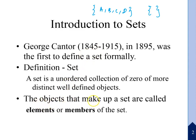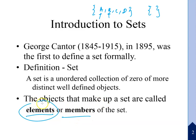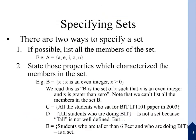The objects that make up a set are called the elements or members of the set. We will use the words element and member interchangeably. The next topic is the method of specifying sets — there are two ways to specify a set.